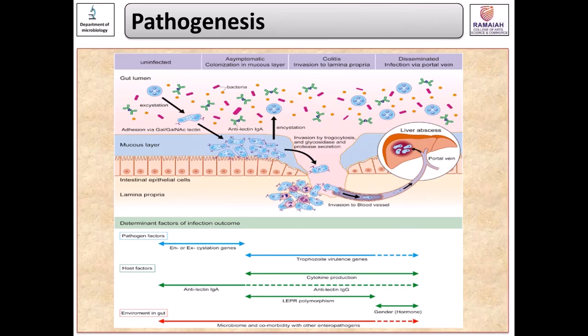Looking at the pathogenesis — what happens at the molecular level during Entamoeba histolytica infection — there are four different stages: uninfected stage, asymptomatic colonization in the mucous layer, colitis, and disseminated infection into the portal veins. We will look at the molecular mechanisms that are affected in the host by Entamoeba histolytica.